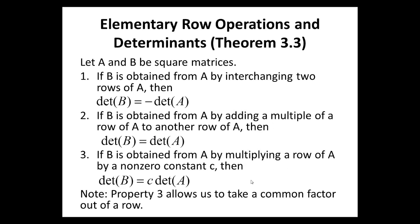Let A and B be square matrices. That is theorem 3.3 on elementary row operations and determinants. Point number 1: If B is obtained from A by interchanging two rows of A, then the determinant of B equals negative the determinant of A. If B is obtained from A by adding a multiple of a row of A to another row of A, then the determinants are exactly the same. If B is obtained from A by multiplying a row of A by a non-zero constant C, then the determinant of B equals C times the determinant of A.